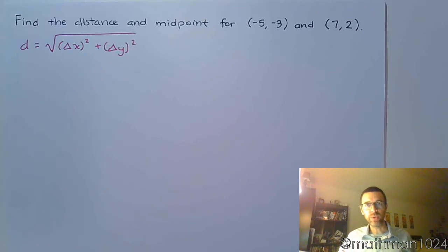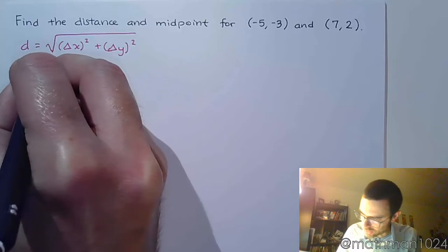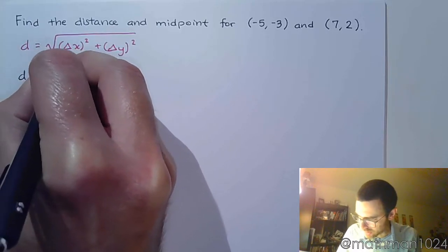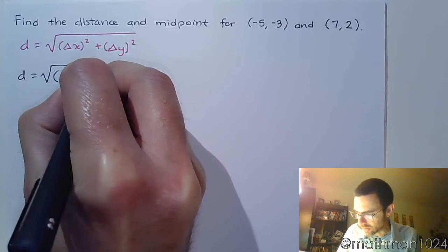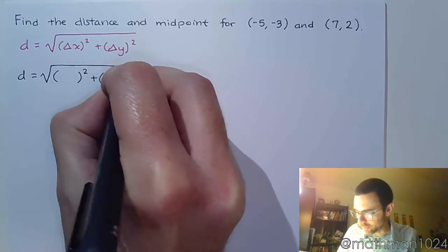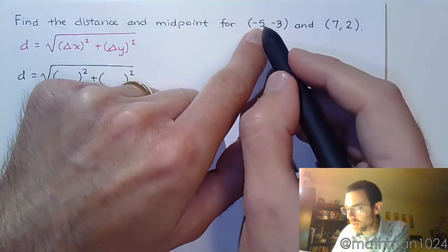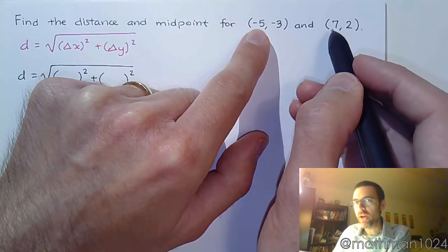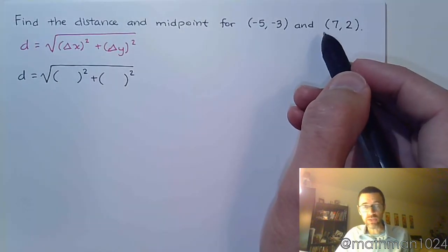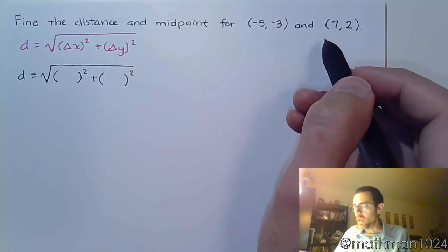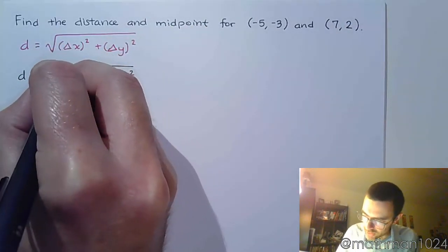We just have to find the difference between these coordinates. Let's find the change in x and the change in y. To go from negative 5 to 7, think about how far apart these guys are. If you want to draw a number line to visualize this, go for it. The difference between negative 5 and 7 is going to be 12.